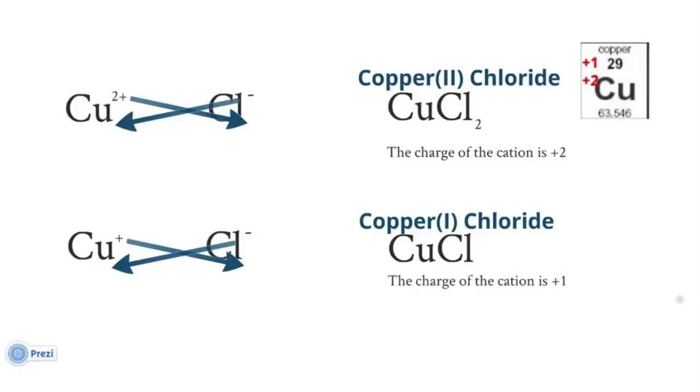So whenever there are different charges for the same cation, we need to specify which one it is with Roman numerals in the name.